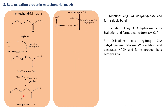Beta-hydroxy acyl coenzyme A undergoes oxidation in the presence of the enzyme beta-hydroxy acyl coenzyme A dehydrogenase. Here, NAD+ is converted to NADH, which enters the TCA cycle and produces three ATP molecules. In the first oxidation step, FAD is converted to FADH2, which also enters the TCA cycle and produces two ATPs. The oxidation of beta-hydroxy acyl coenzyme A forms beta-keto acyl coenzyme A.